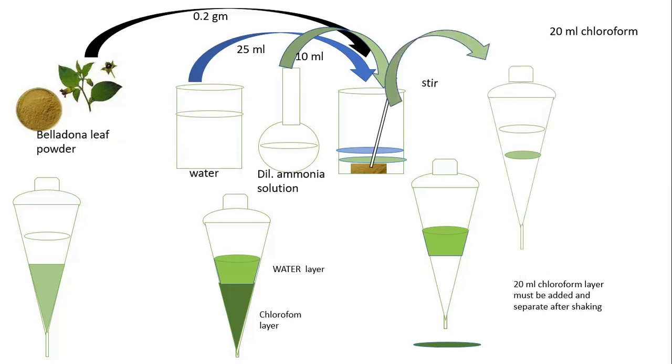Take a separating funnel. In that separating funnel, transfer that particular mixture. Add 20 ml of fresh chloroform in that separating funnel. Then shake it. After shaking, keep it aside for a few minutes. Here, the separation of two layers occurs. The upper layer is the aqueous layer, and the lower layer is the chloroform layer because chloroform is heavier than water.